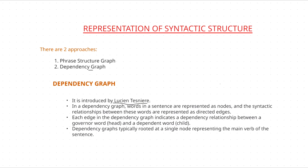In a dependency graph, words in a sentence are represented as nodes and the syntactic relationships between these words are represented as directed edges. When you take phrase structure graph, a phrase is represented as a node, but when it comes to dependency graph, a word is represented as a node. This is the main difference between these two things.